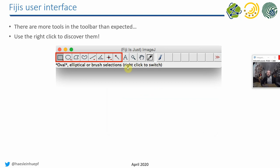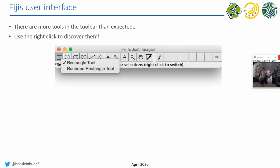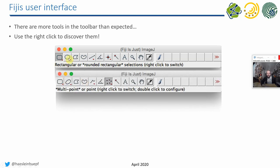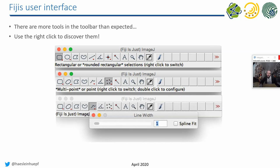The Fiji main window has many buttons — different annotation tools. You can draw a rectangle or a circle on regions in your image. Importantly, there is a right-click option on these buttons, which reveals additional tools. For example, you'll find ellipsoids, a single point selection tool, and a multiple point selection tool — useful for manually counting cells. You can also double-click on buttons to configure them in more detail. Buttons where you can do this are marked with a red triangle.